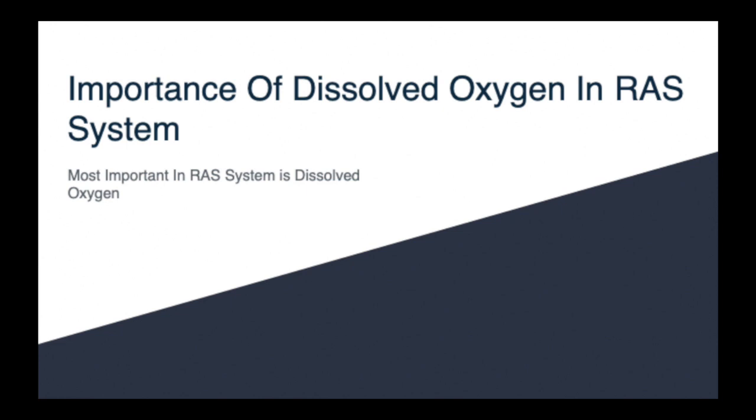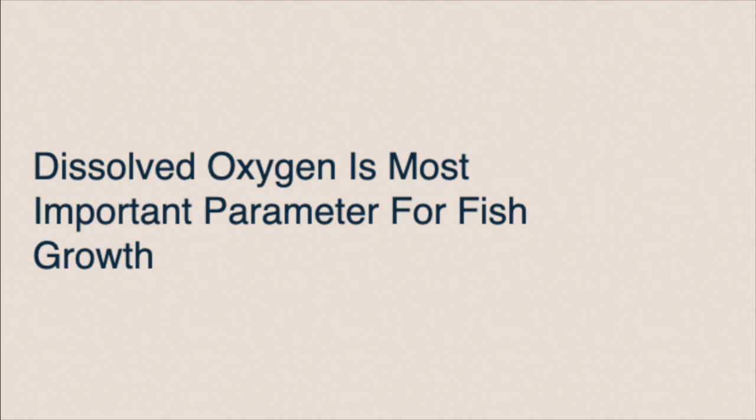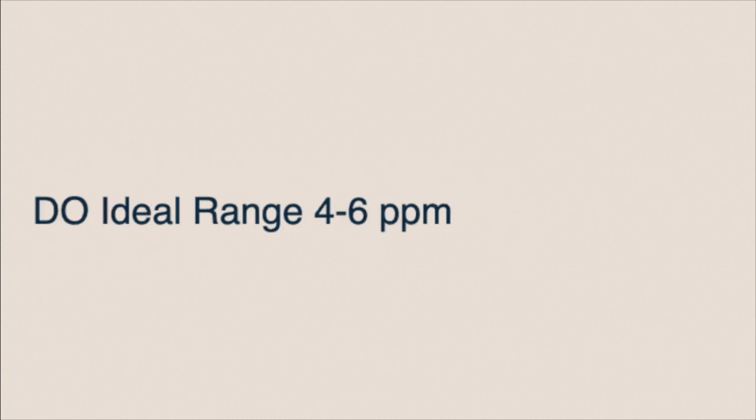In a RAS system, dissolved oxygen is the most important parameter for fish growth. The ideal range of dissolved oxygen is 4 to 6 ppm.